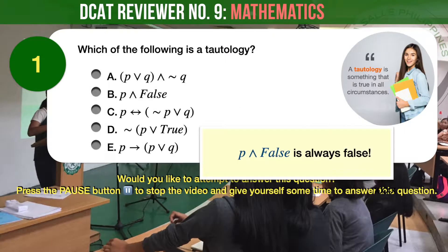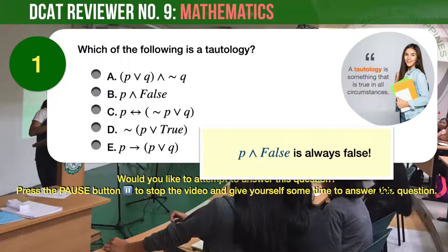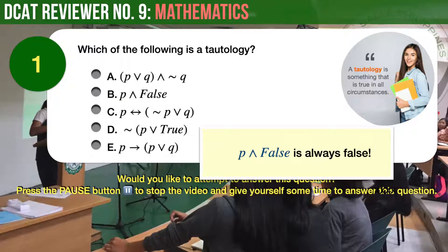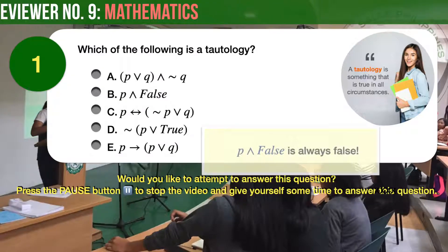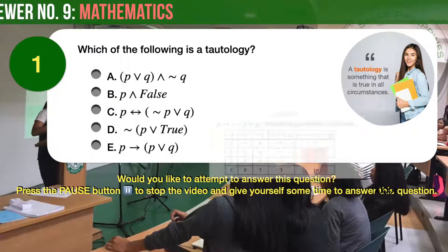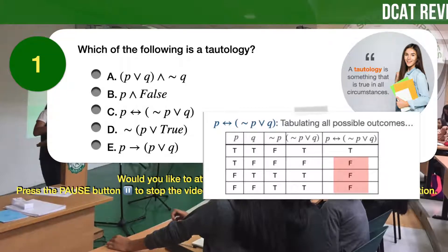Answer choice B — P and false — will always result in a false outcome, so it is not a tautology either. Let's proceed to examine answer choice C by tabulating all of its possible outcomes.